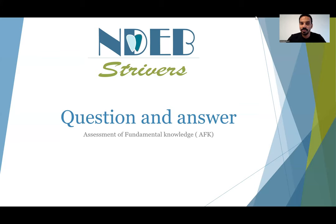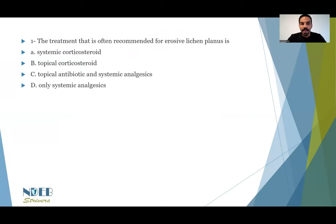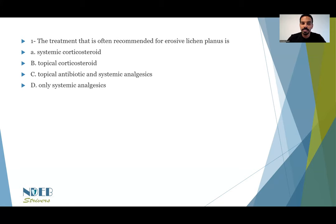The first question we have today is an oral pathology question. The question says: the treatment that is often recommended for erosive lichen planus is — A) systemic corticosteroid, B) topical corticosteroid, C) topical antibiotic and systemic analgesics, or D) only systemic analgesics.